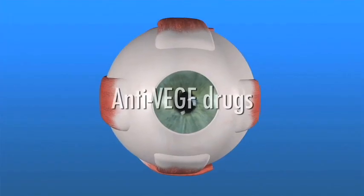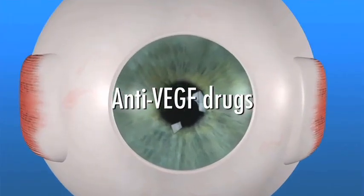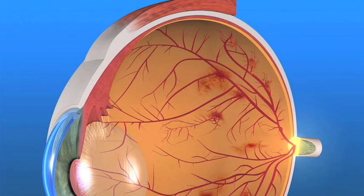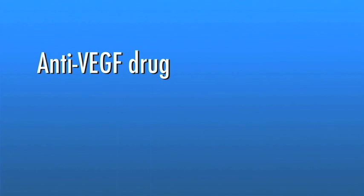Despite having laser surgery, some people with PDR may still develop further problems. Your doctor may recommend treating your PDR with an anti-VEGF drug. Anti-VEGF drugs target a specific chemical in your eye called vascular endothelial growth factor, or VEGF, which is critical in causing abnormal blood vessel growth on the surface of the retina, as well as in other parts of the eye. Several drugs have been developed that can block the trouble-causing VEGF.